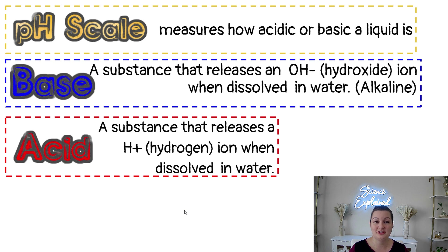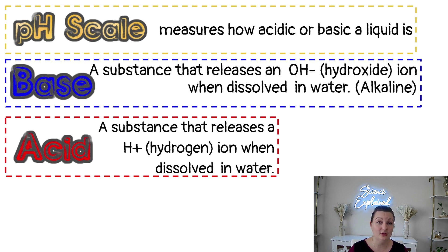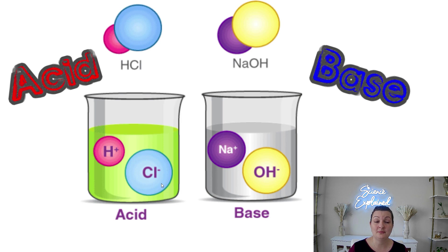A couple vocabulary words to know. The pH scale is the measure of how acidic or how basic a liquid is. A base is a substance that releases OH negative hydroxide ions in water when it dissolves — we also call a base alkaline. An acid is the substance that releases the H positive or hydrogen ions when dissolved in water. An acid is going to have the H positive and a base is going to have the OH negative.